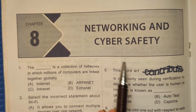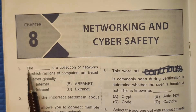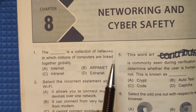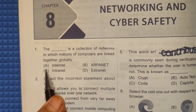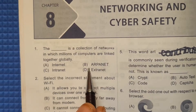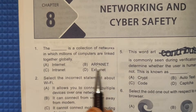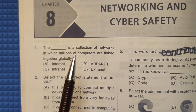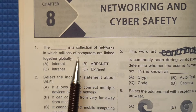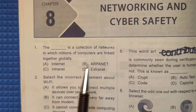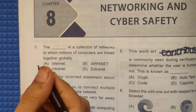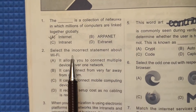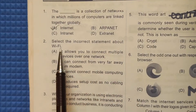First question: The dash is a collection of networks in which millions of computers are linked together globally. Options: A) Internet, B) ARPANET, C) Intranet, or D) Extranet. Internet is a collection of networks in which millions of computers are linked together globally, so the correct answer is option A.